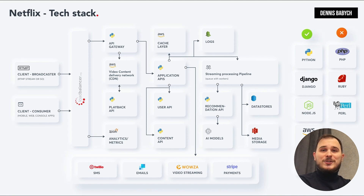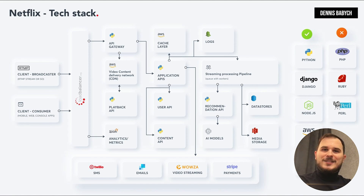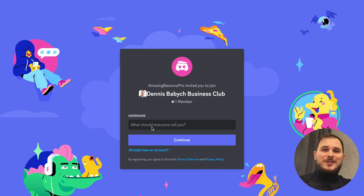Remember that your goal is to choose the right tech stack at each stage of your software development process. Don't overdo it at the beginning, but think in advance about what you'll need in the future based on your feature set. Choosing the right tech stack is like getting a proper diagnosis after a blood test — it's essential for your app's success. I've created a Discord business community for startup founders where you can seek advice and gain valuable business insights.